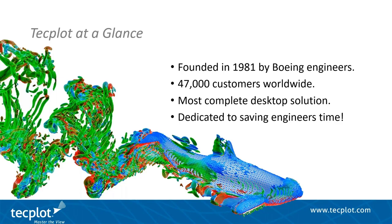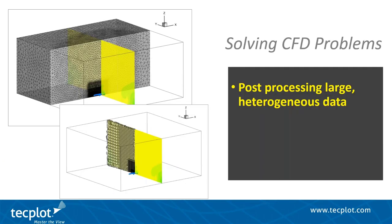TechPlot 360 is known as the most complete desktop post-processing solution. It has the ability to render not only beautiful 3D plots, but also quantitative plots with line plotting and 2D plotting where the real decisions are often made. We are dedicated to saving you time by optimizing the way data processing is done in TechPlot 360, by reducing the number of mouse clicks for common workflows, and by automating TechPlot 360 through macros and Python. We're also dedicated to solving the big problems in CFD, one of which is post-processing large heterogeneous datasets. The SZL or subzone load-on-demand file format helps by loading less data, using less RAM, and performing workflows faster.